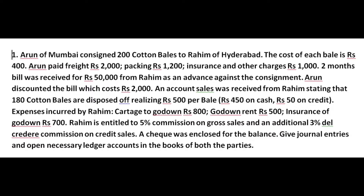Arun discounted the bill, which costs 2000 rupees. An account sales was received from Rahim stating that 180 cotton bales are disposed of, realizing 500 rupees per bale — 450 on cash, 50 rupees on credit. Expenses incurred by Rahim: cartage to godown 800 rupees, godown rent 500 rupees, insurance of godown 700 rupees. Rahim is entitled to 5% commission on gross sales and an additional 3% del credere commission on credit sales. A cheque was enclosed for the balance. Give journal entries and open ledger accounts in the books of both parties.